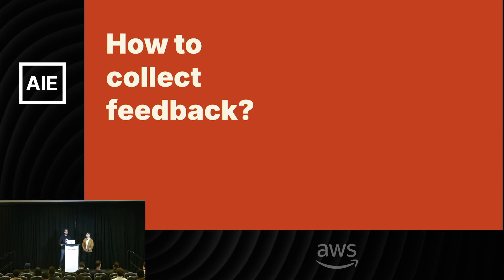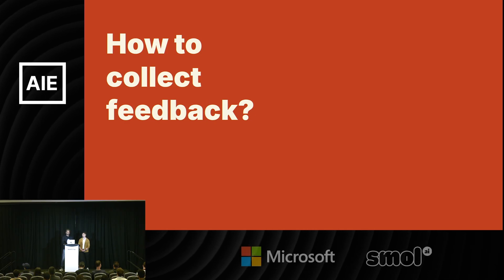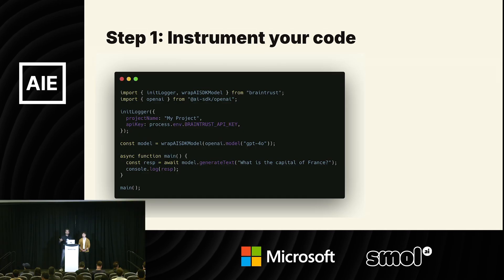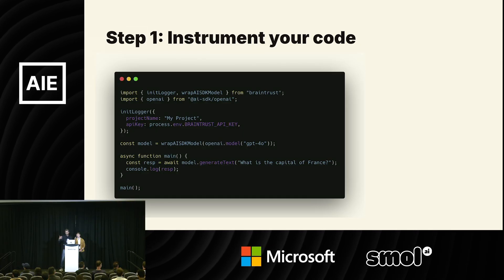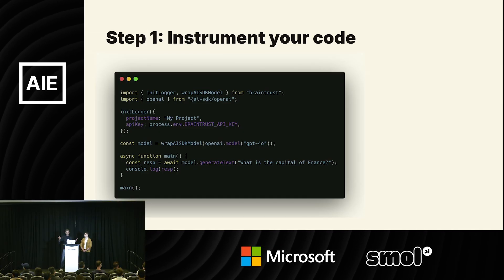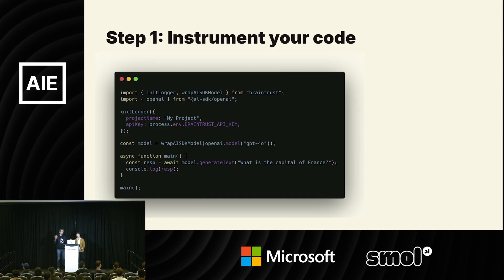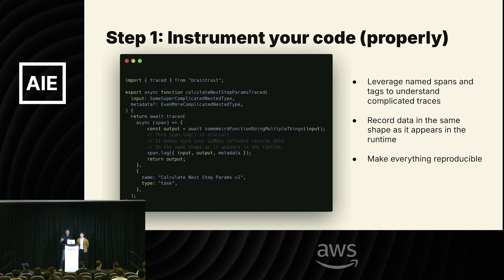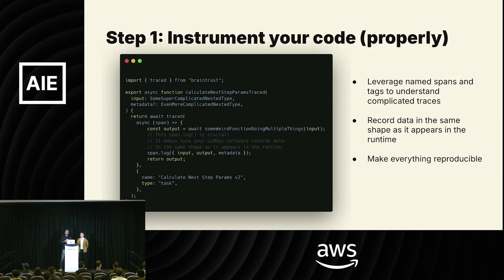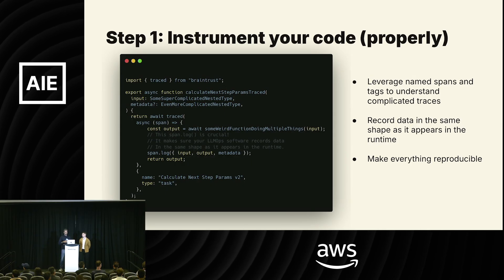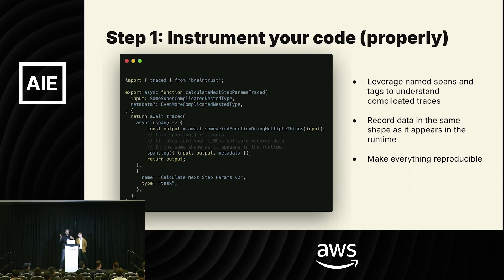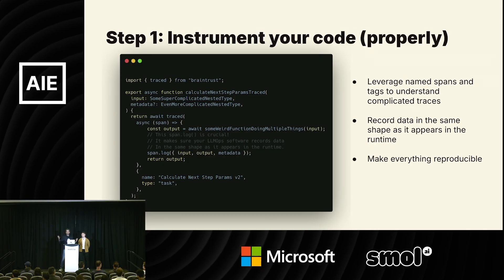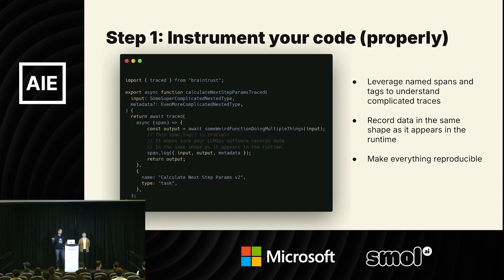Starting from the beginning: how do you collect actionable feedback? The first step is to make sure you're instrumenting your code. Whether you're using Braintrust or something else, they all offer an easy way to get started by tracing your completion calls. But you also want to record much more than that in your traces — the tool calls, the errors from those tool calls, and the pre- and post-processing steps, so it's easier to debug what went wrong.